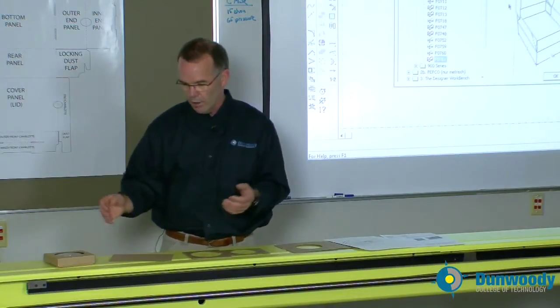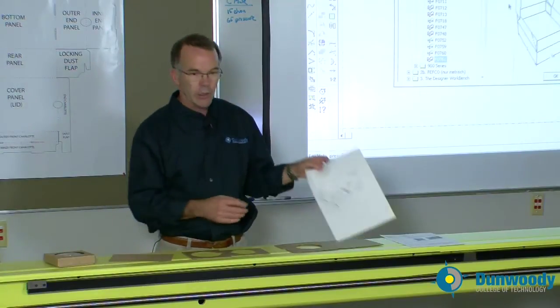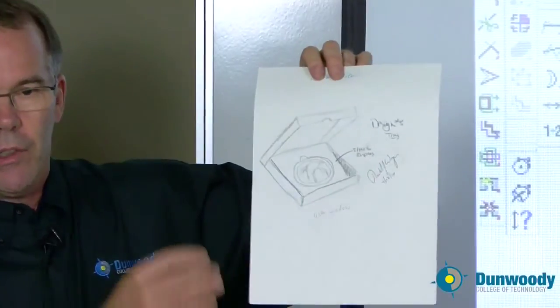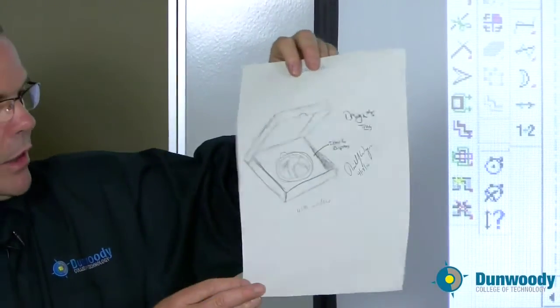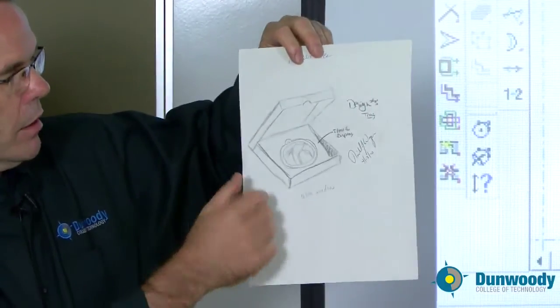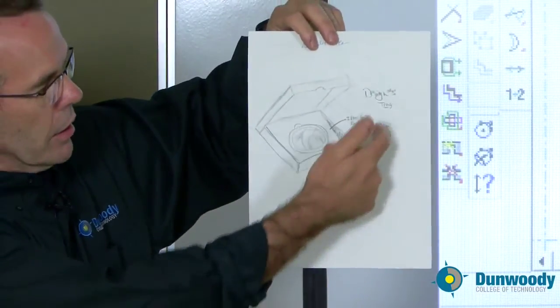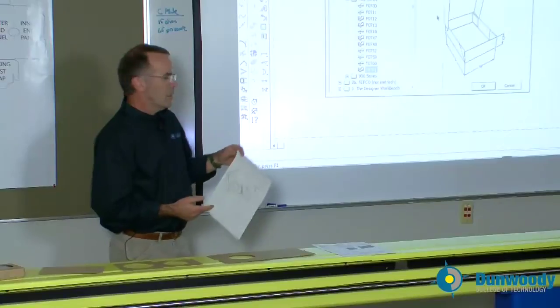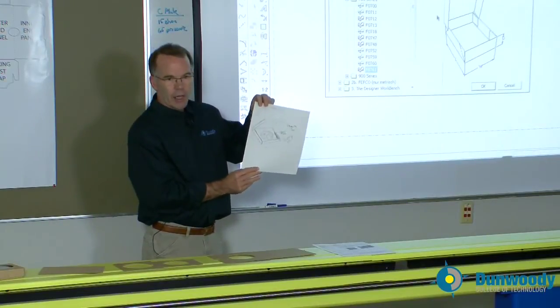Now, the rough stages get the designer and the client to a certain point where the client says, yeah, I like the shape of that. I like the basic concept. Once this is accepted and signed off, and you'll see that there's a client signature right there indicating that.